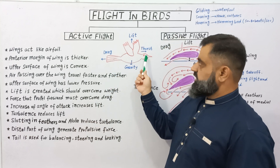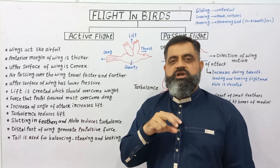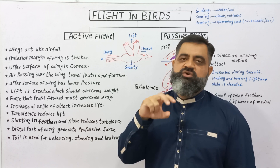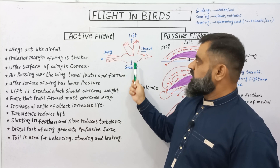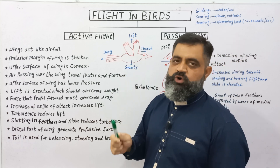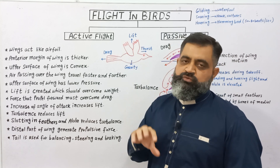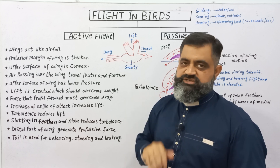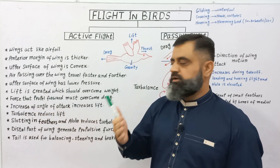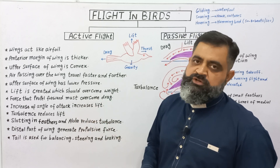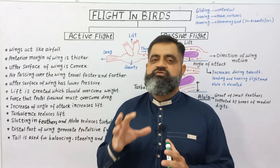When a bird flies in the air, it has two important tasks. Number one, to overcome the force of gravity, and number two, to overcome friction, which is known as drag force. The gravity of the earth is overcome by lift created by the wings, while the wings also produce a kind of thrust which overcomes the drag force to move the bird in a forward direction. The force of the bird's wings that propels it forward must overcome drag.